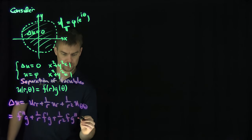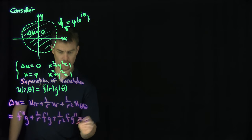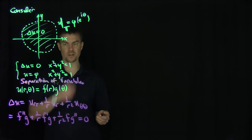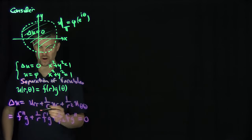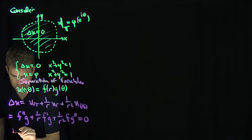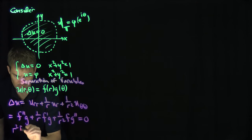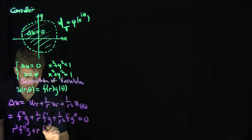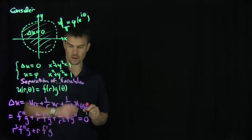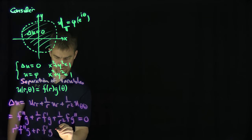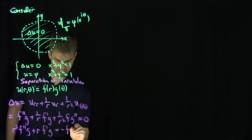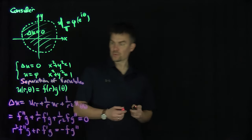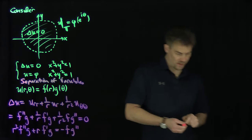That has to equal zero. Multiplying through by r², this gives r² f'' g + r f' g + f g'' = 0, which we can rearrange as r² f'' g + r f' g = −f g''. Then we separate variables.